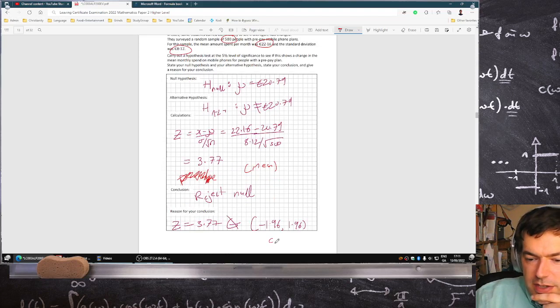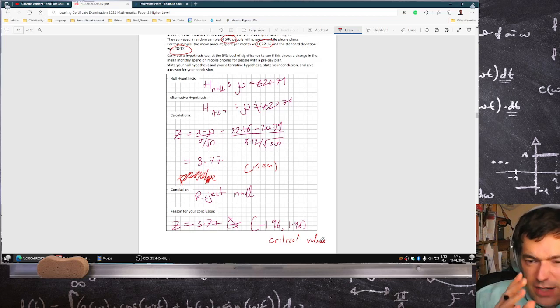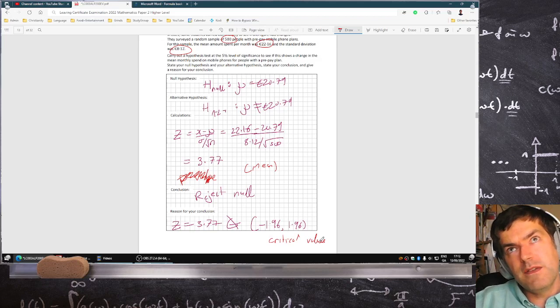Yeah, these are called the critical values, by the way. And I'm really surprised that they gave such a z-value because it means that students who wanted to calculate the p-value can't. And they sometimes ask for the p-value, so it's quite unusual.